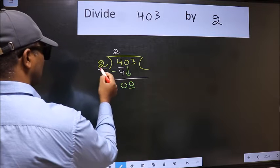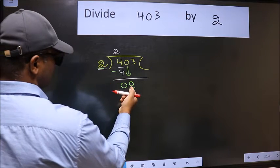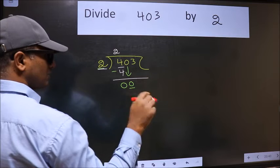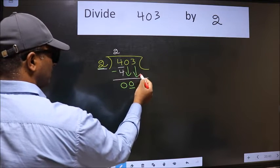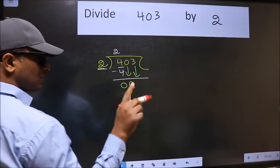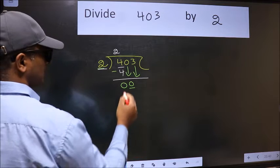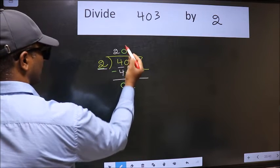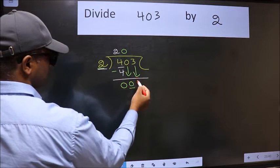Here we have 0 and here 2. 0 is smaller than 2, so we should bring down the second number. The rule to bring down the second number is we should put 0 here. Then only we can bring this number down.